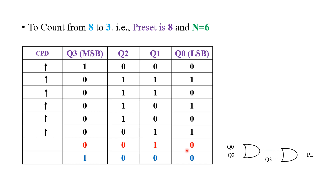At this point, we have to consider this value 2 and design the feedback. One thing we have to remember: while considering the down count operation with respect to the feedback to the PL, we are going to consider the bits which are having the value 0. When it comes to the value 2, Q0, Q2, as well as Q3 — all these three are having the value 0. Therefore, we are going to consider all these three in order to design the feedback to the PL.